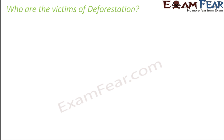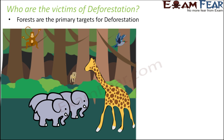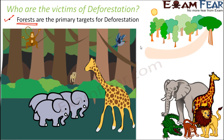Forests are the primary target of deforestation. Nobody comes to cut down trees in your garden because it is just a small area and won't make much difference. But if you cut down an entire forest you get a large stretch of land that can be used for agriculture, industry setup, or residential purposes. So forests are the main targets, and when we cut down trees in forests, the plants and animals living there are primarily affected.